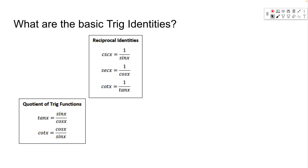One key technique we use to verify things is turning all trig functions into their equivalent sine and cosine form. That's the way I do it — we'll turn everything to sine and cosine, manipulate them until they look like the other side. That's mostly what we're doing today: manipulating things.